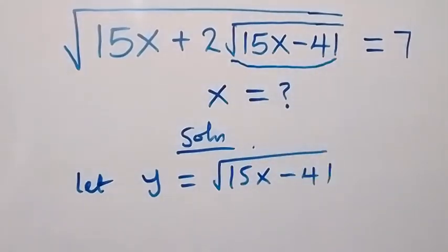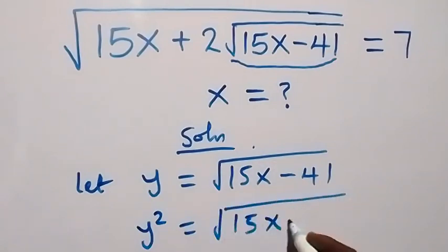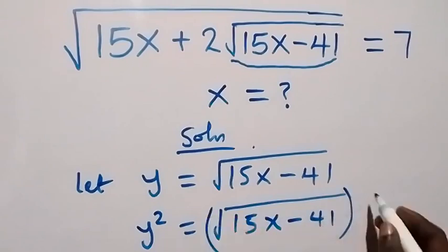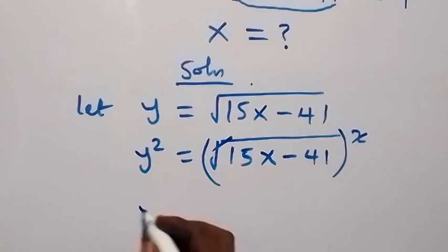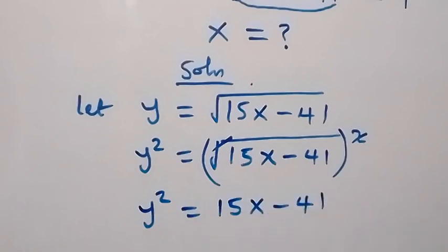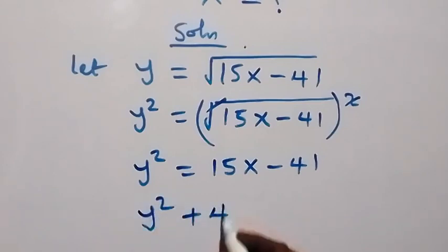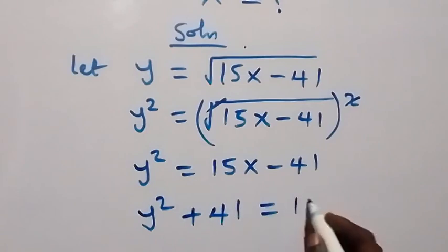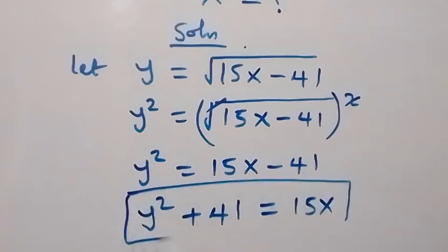We use y to represent that. Squaring both sides, we have y squared equals the square root of (15x minus 41) squared. The square cancels the square root, giving us y squared equals 15x minus 41. Taking 41 to the other side, we have y squared plus 41 equals 15x.